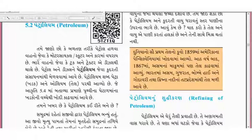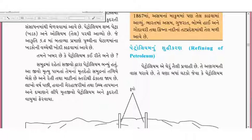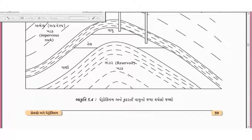Petrol, Diesel, Petroleum - 'Petroleum' - 'Petra' + 'Oleum' = Rock + Oil - Petroleum - Petroleum - Petroleum - Petroleum - Rocks - Petroleum - Petroleum - earth - Petroleum - Petroleum - Petroleum - Petroleum - natural gas - Petroleum - Petroleum - Petroleum. Petroleum - Petroleum - Petroleum - Petroleum - Petroleum - rocks - Petroleum - Petroleum - Petroleum.